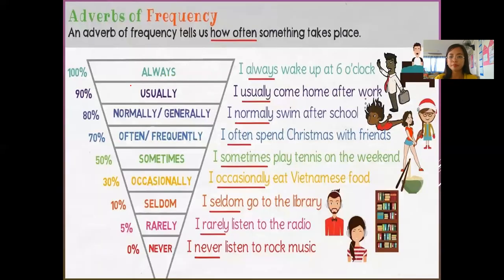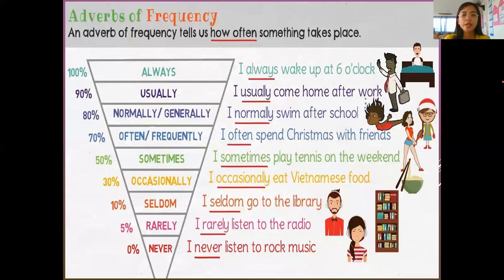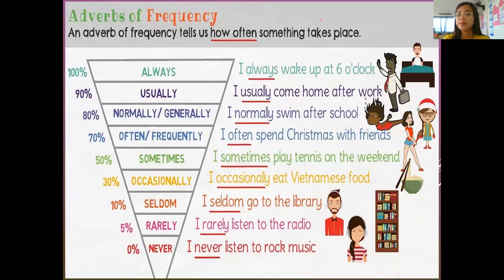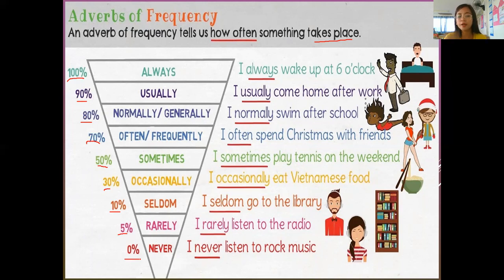Now let's look at adverbs of frequency. An adverb of frequency tells us how often something takes place. As you can see, we have: 100%, 90%, 80%, 70%, 50%, 30%, 10%, 5%, and 0%. When you say 0%, that means never.